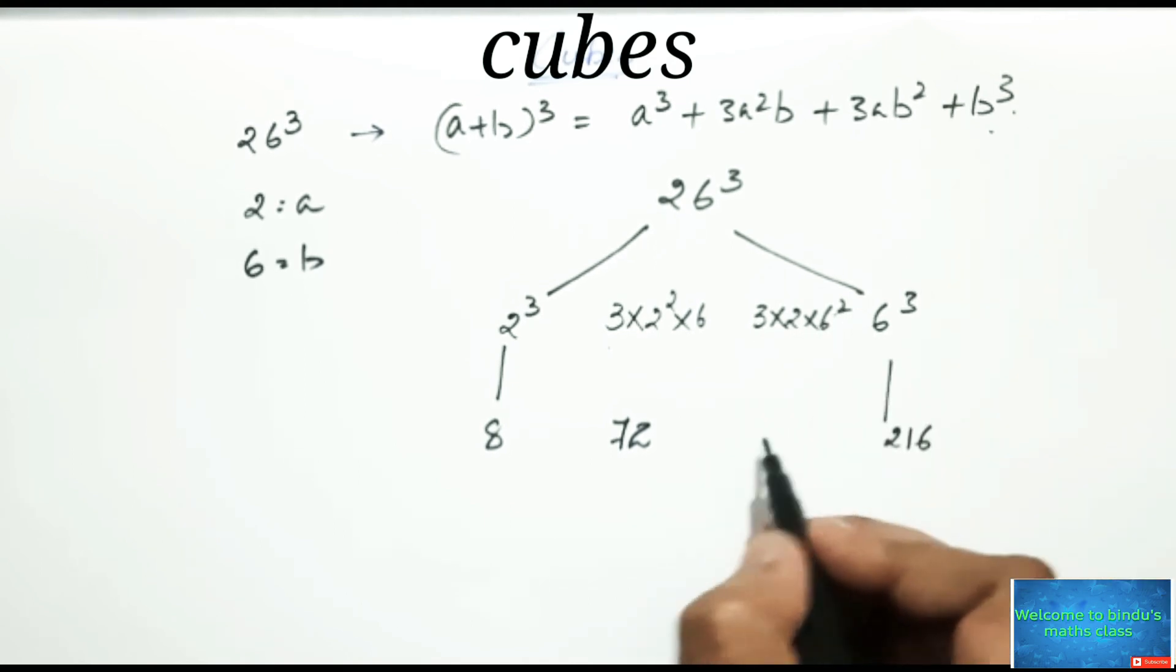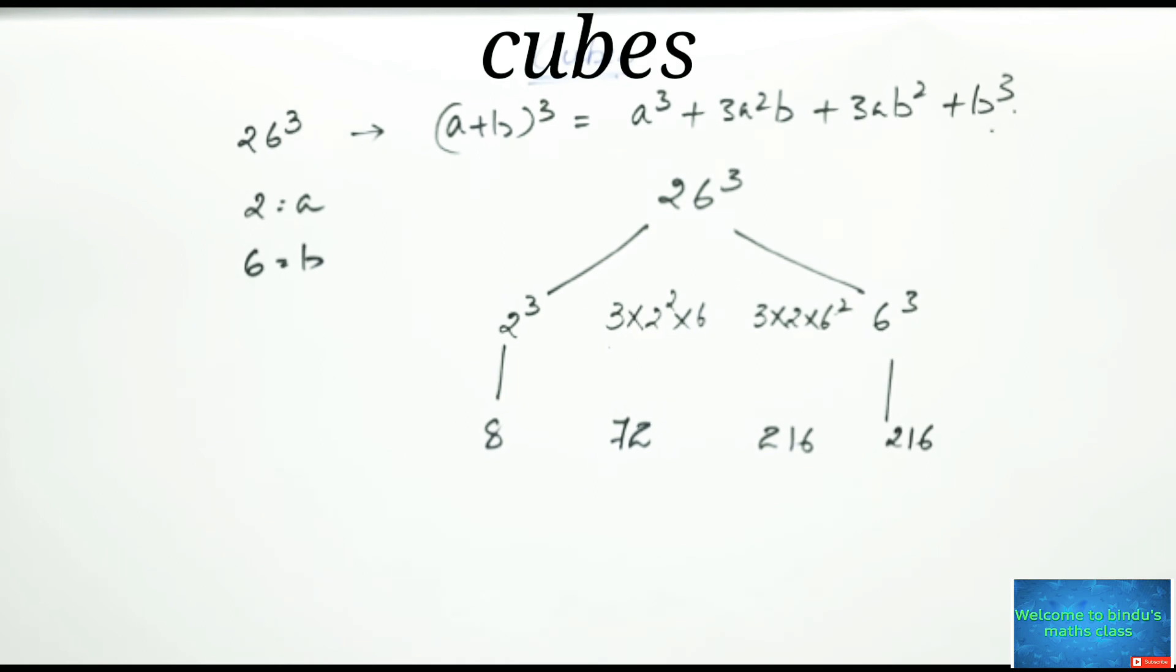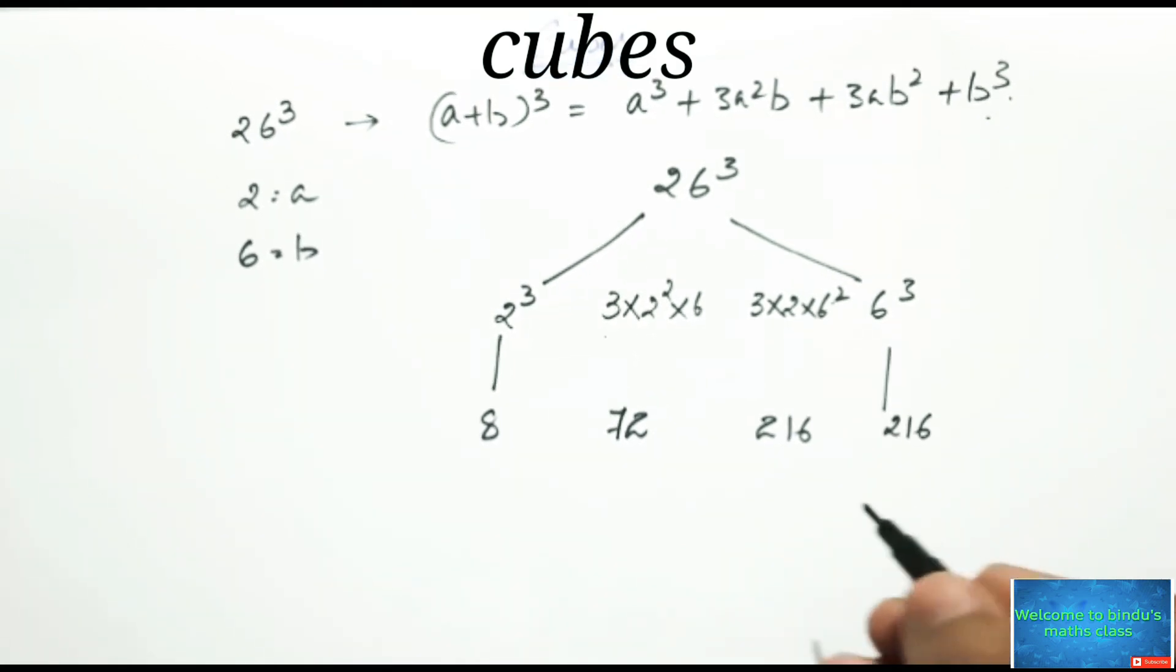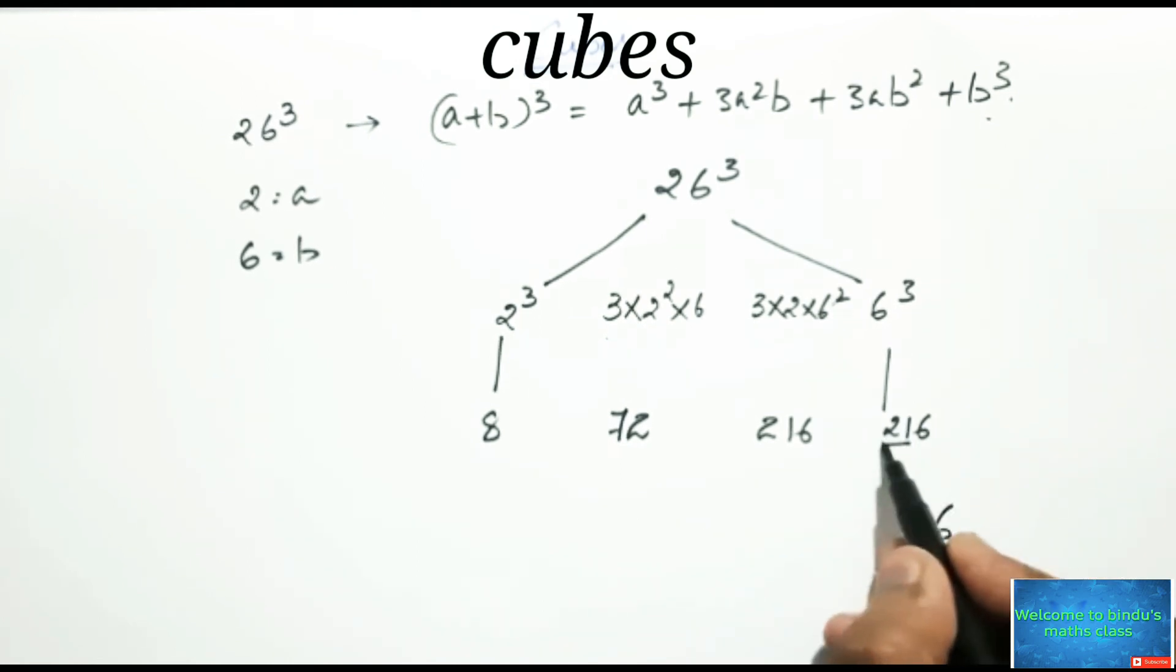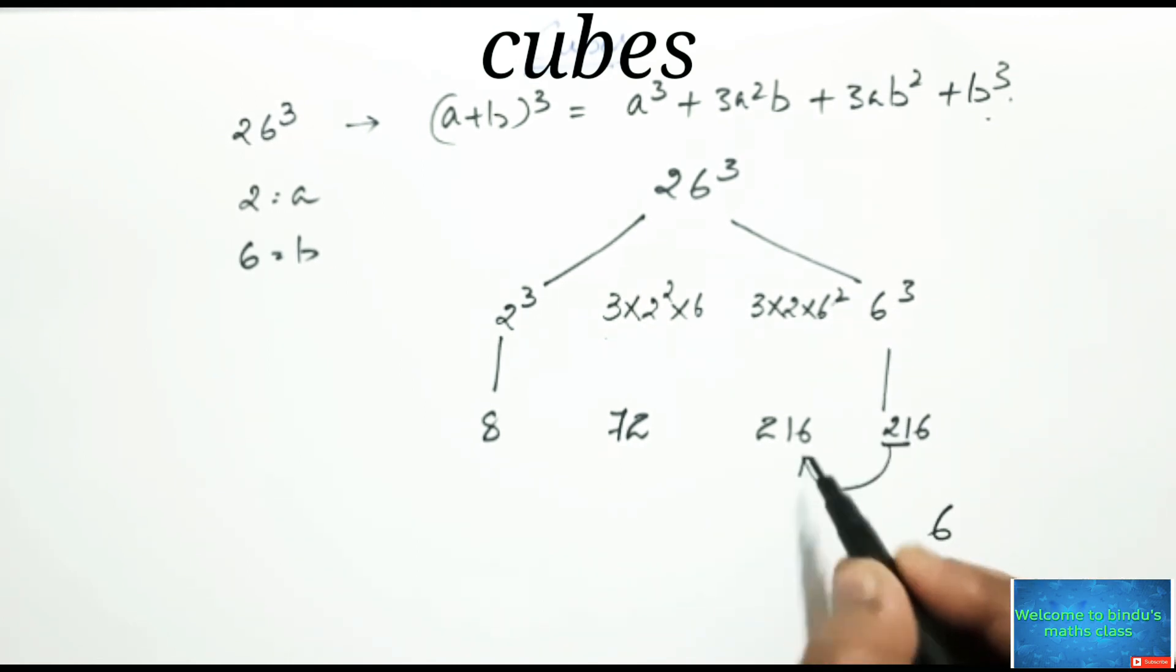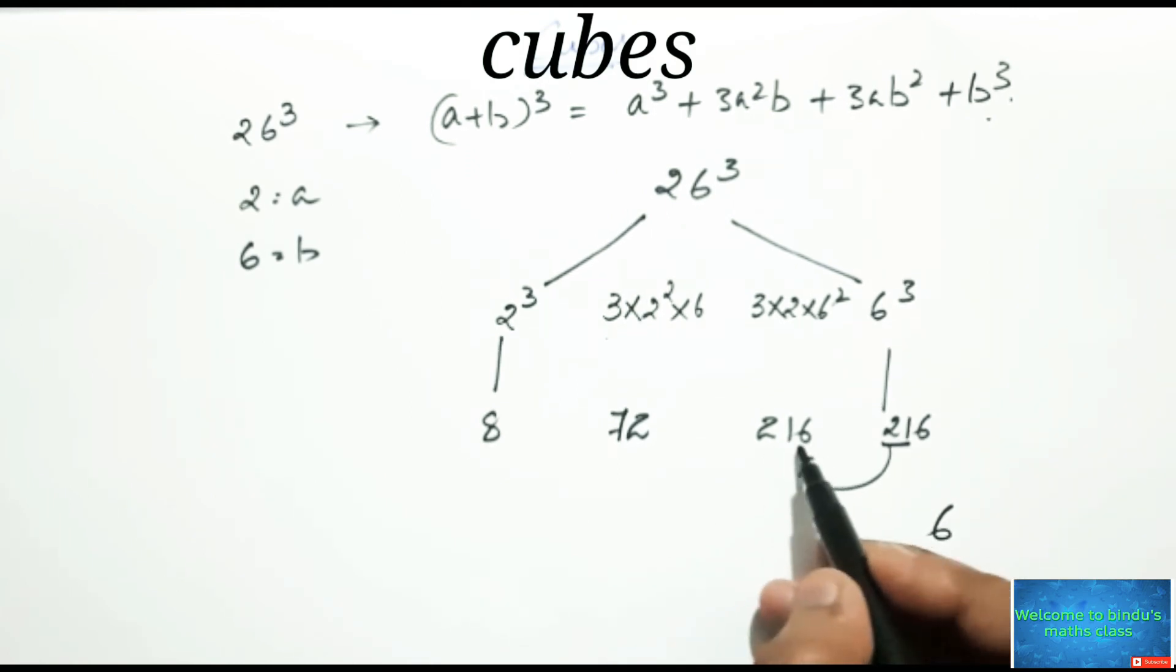Now add like this, taking the units digit of each number. Here 6 is there so write down 6 here and this 21 will be carry forward to the next place, that is 216 plus 21, that is 237.